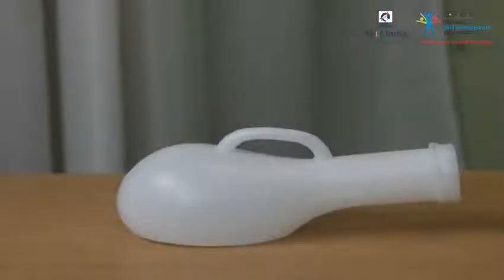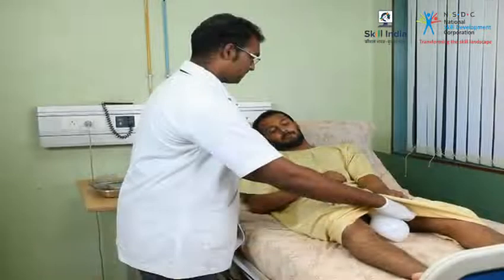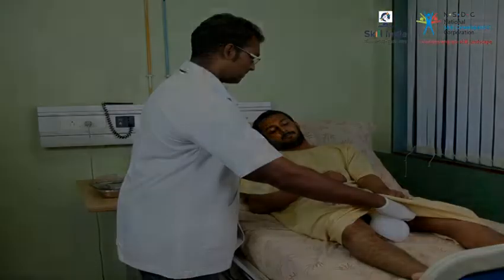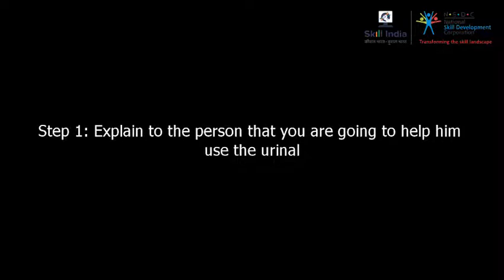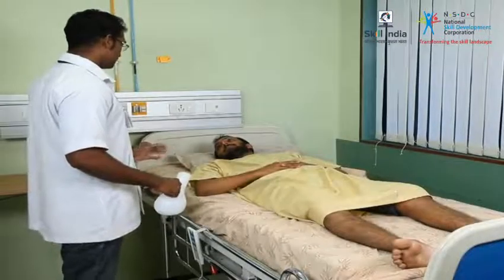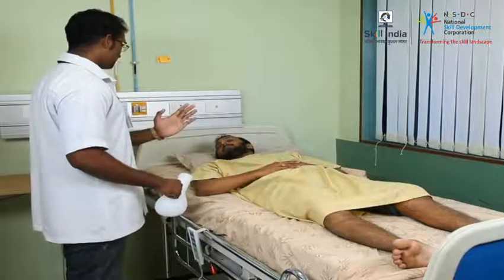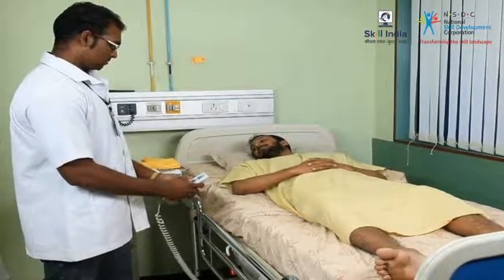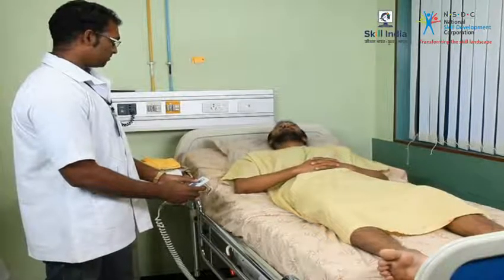Placing the urinal for use. The urinal is used for the male patient and is designed to facilitate the passage of urine while in bed. Explain to the person that you are going to help him use the urinal — this can ease any fear or uncertainty he may have. Raise or level the bed as necessary; for example, some patients may desire to have the head of the bed raised.